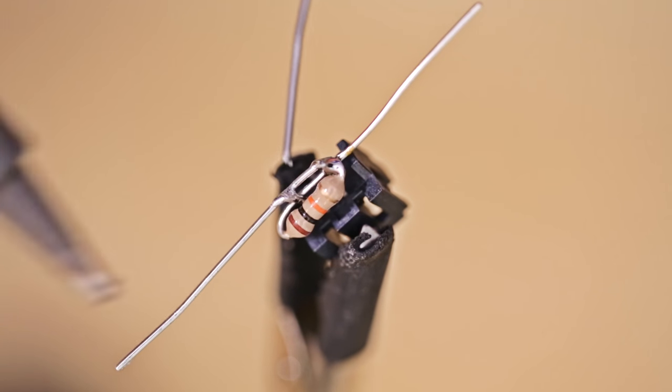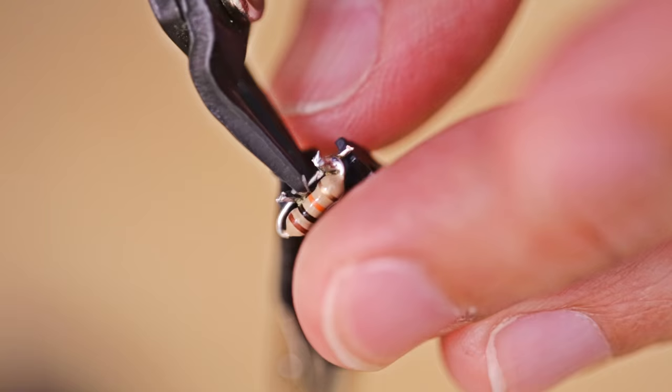Once everything is soldered, we can then trim off any excess using flush snips. But be sure to leave some of the metal because we still need to attach wires to them.